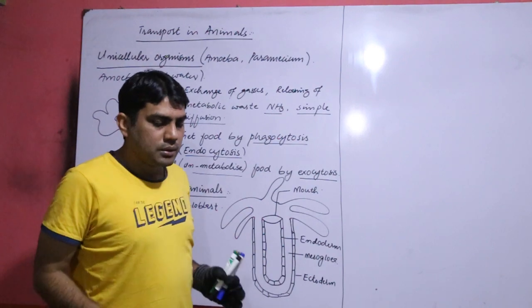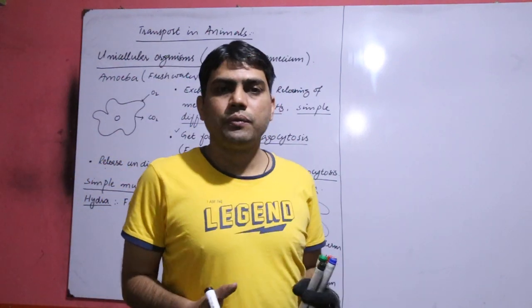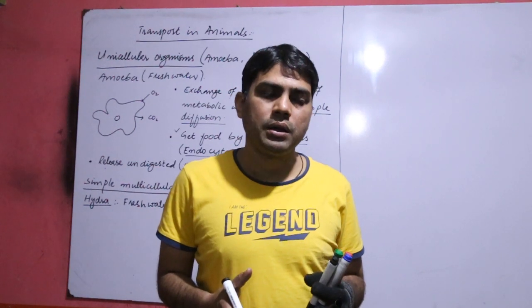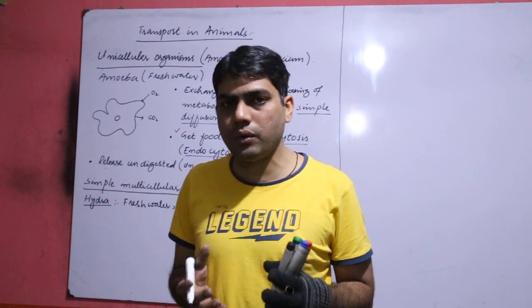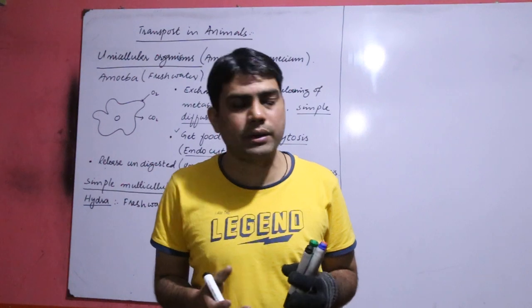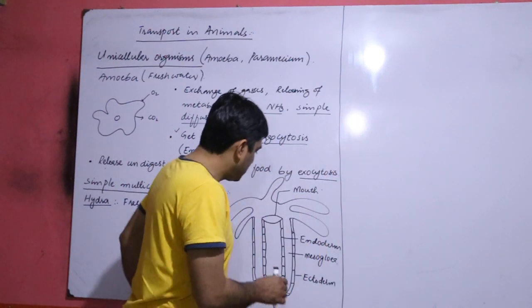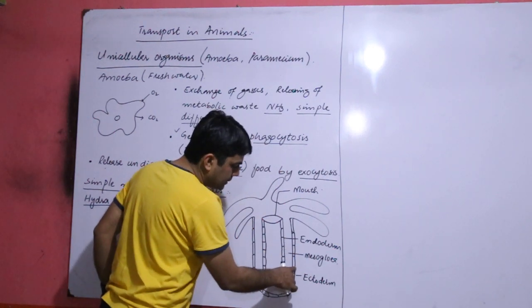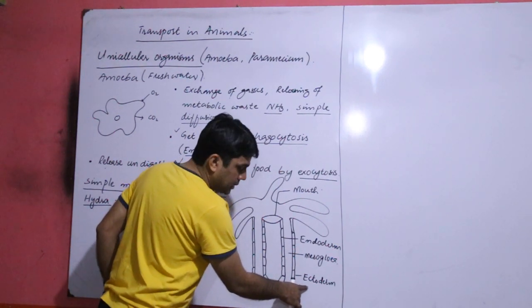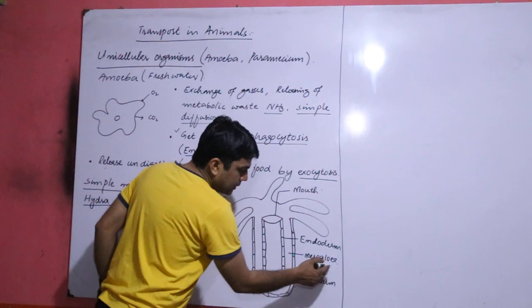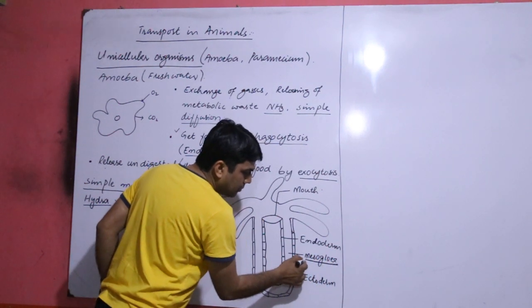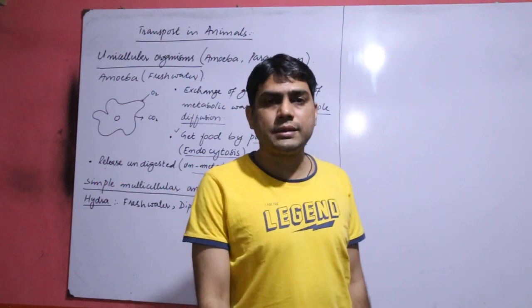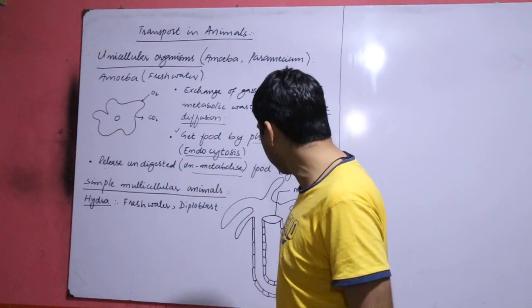Diploblasts are the organisms which form two germ layers during development. One layer is called endoderm and the other layer is called ectoderm. So this is the inner layer, it is called endoderm, and this is the outer layer, it is called ectoderm. Between two layers there is a noncellular mass called mesogloia which is noncellular gelatinous mass.